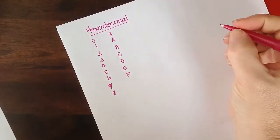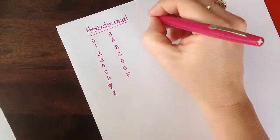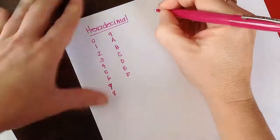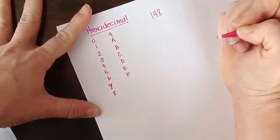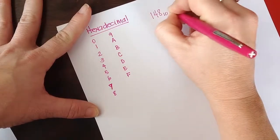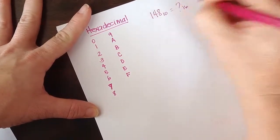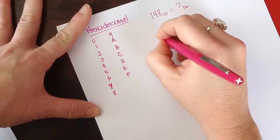Okay, so let's do another conversion problem from decimal to hexadecimal, and this time let's do 148 in base 10. What does that equal to in base 16? So we need to take 148.